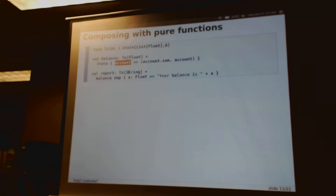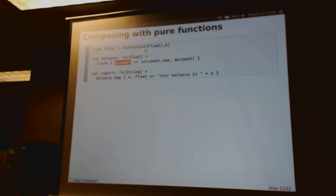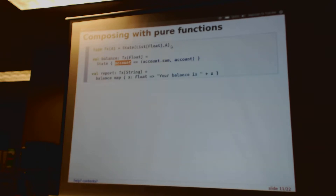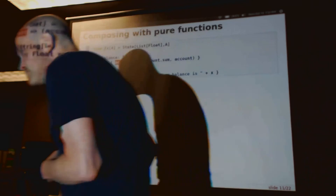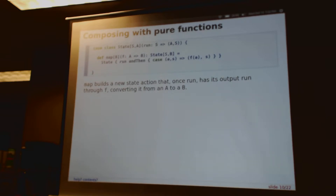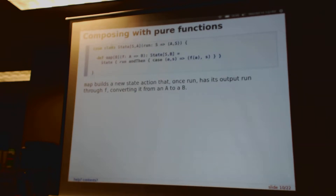Audience question: why use a list there? It doesn't look like the pairs before — TX of A is like a state of list of things. So when we say TX of A, type aliases are just convenience — they're exactly identical to the compiler. It's just a shortcut for saying state of list of float of A. If we go back to the state definition, state of list of float of A means S is a list of float. So any time we create a TX, we're creating a state, but we're guaranteed that this S is always a list of float.